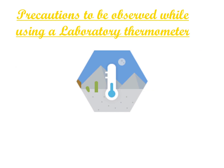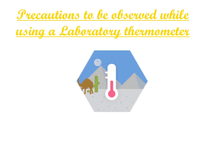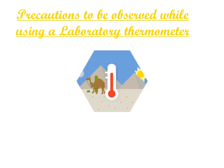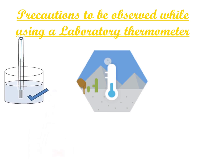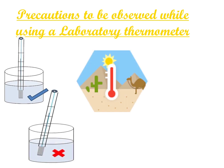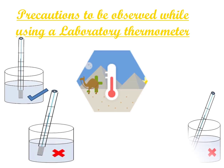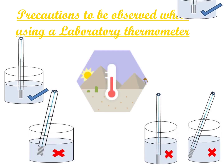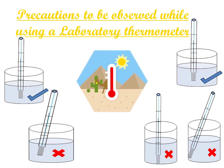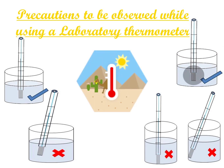Precautions to be observed while using a laboratory thermometer: Number 1, the laboratory thermometer should be kept upright and not tilted. Number 2, the bulb should not touch the surface of the container. Number 3, the bulb should be surrounded by the substance from all sides.